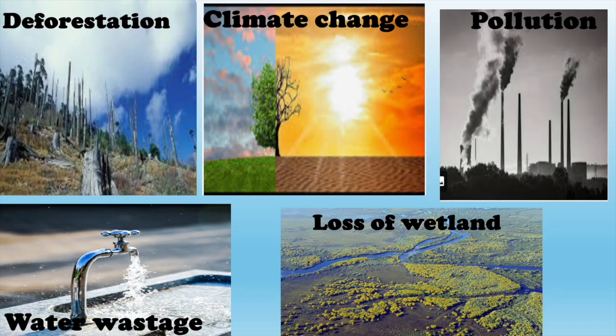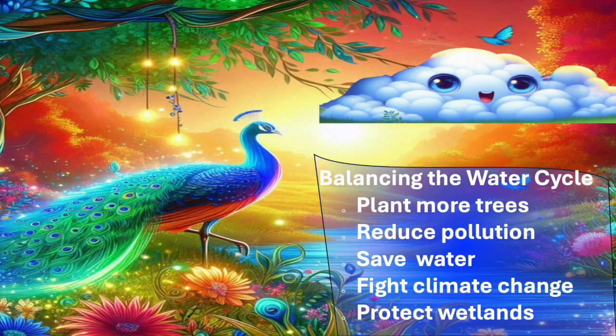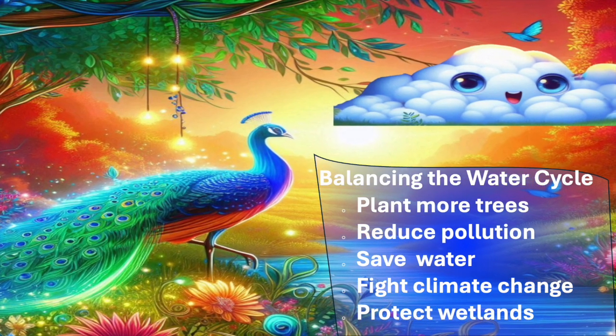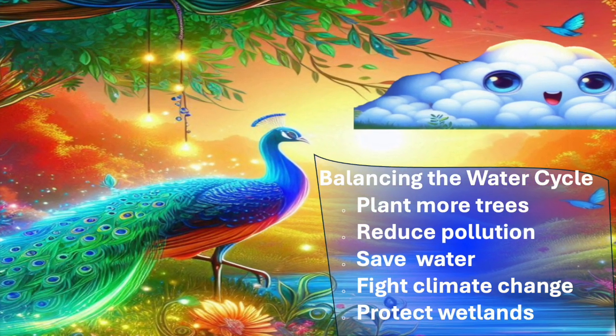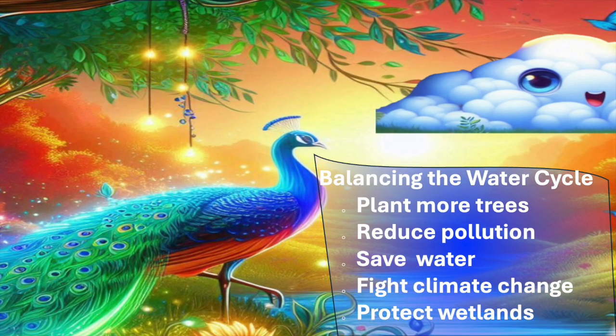Industrial and agricultural pollutants contaminate water, reducing its quality and affecting evaporation. Air pollution can alter cloud formation and rainfall patterns. The loss of wetlands — destroyed for development or farming — reduces areas where water can naturally collect and be replenished. To maintain the rhythm of the water cycle, we must plant more trees, reduce pollution, save water, fight climate change, and protect wetlands to maintain our ecosystem.